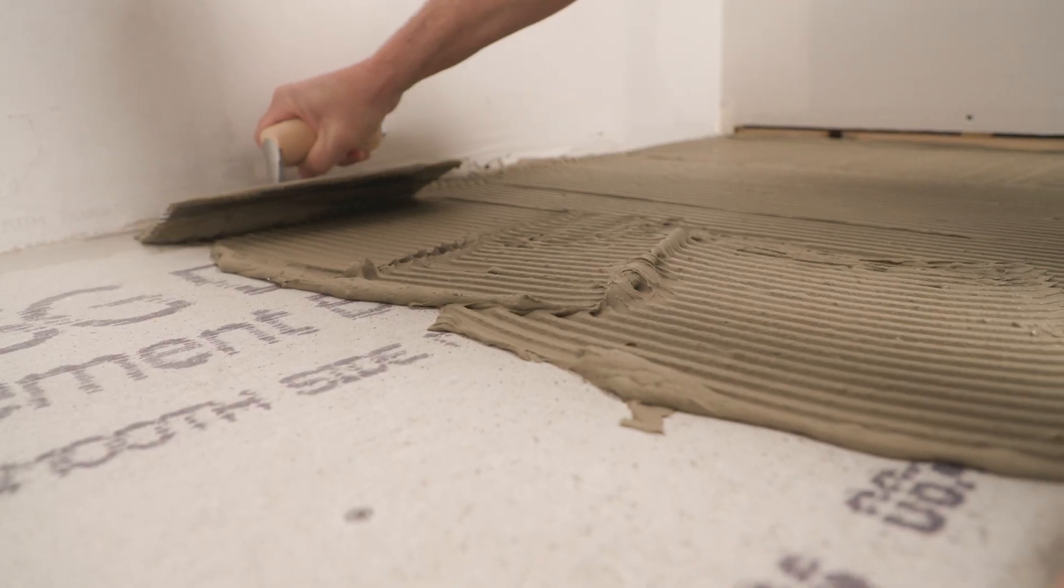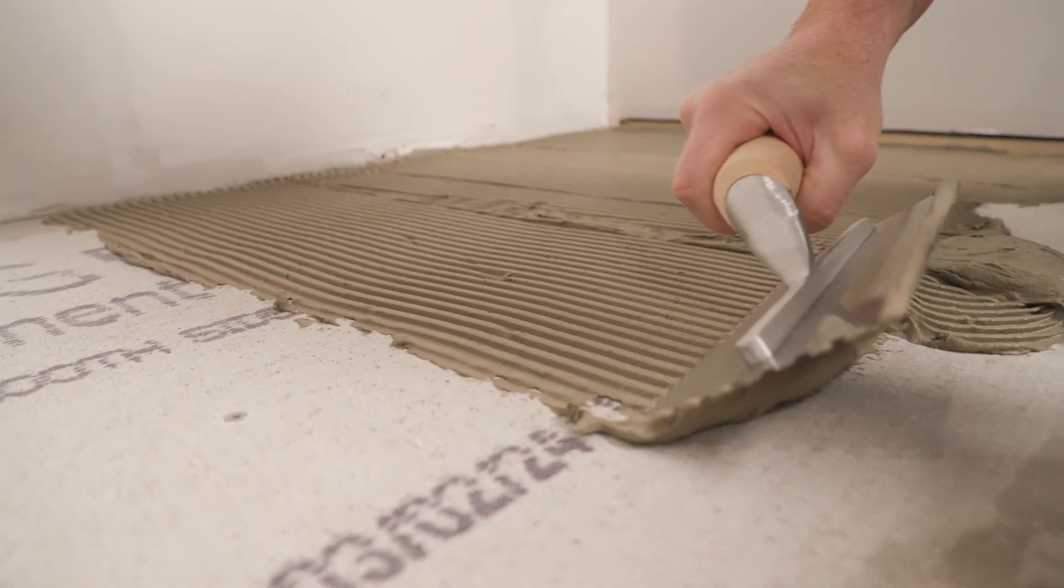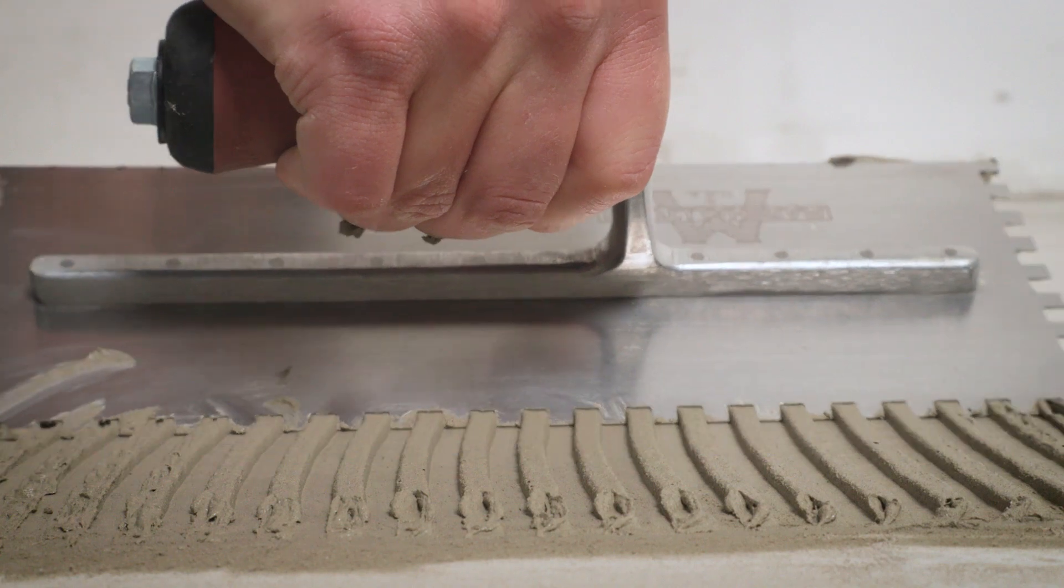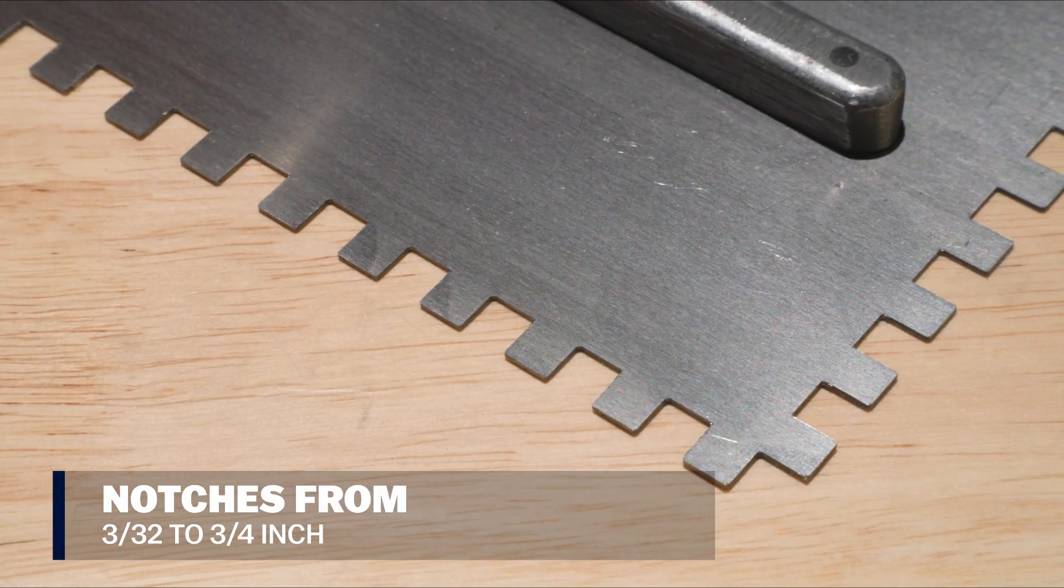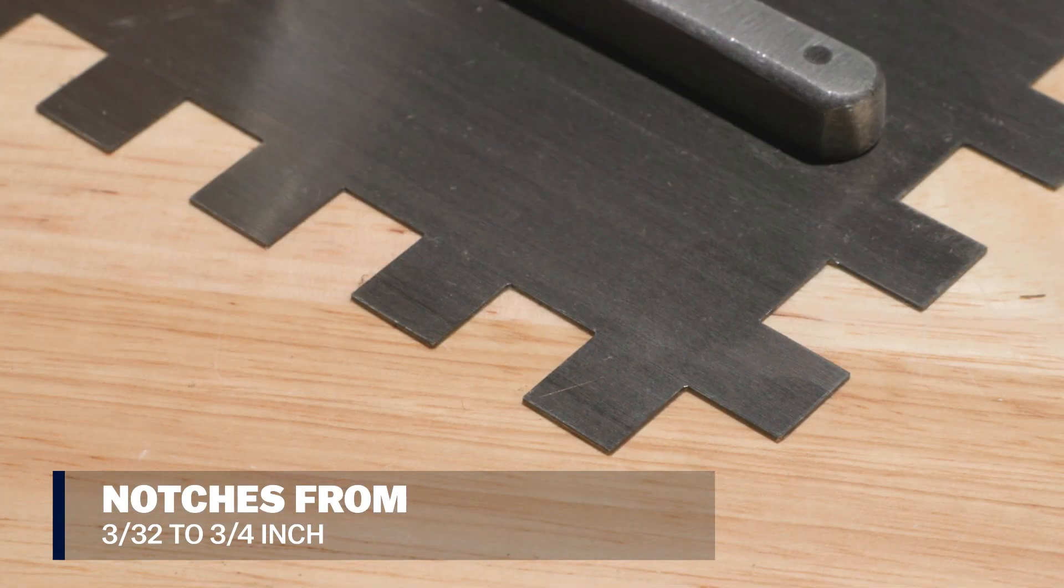The blades come in many different notch sizes and shapes, so you can apply the correct amount of thinset for your application. Sizes are available in small 3/32nds of an inch notches, all the way up to three quarters of an inch.